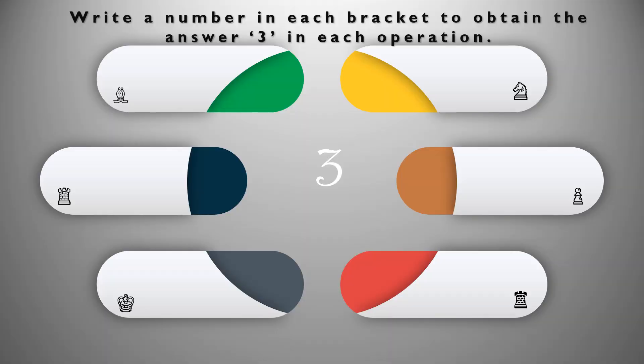Activity: Write a number in each bracket to obtain the answer 3 in each operation, based on our previous class. Let's solve: -6 + [9] = 3. How? 9 - 6 = 3.